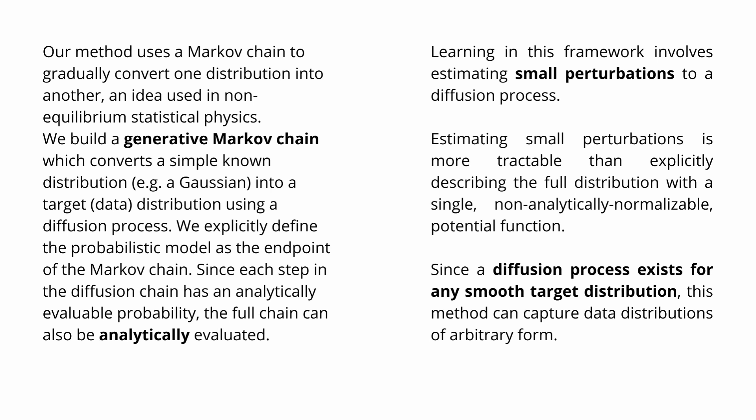The essential point, visible on the right-hand side, is that learning involves estimating small perturbations to the diffusion process. This is the trick from physics: if you cannot solve it completely, you start with small perturbations and let the dynamical system evolve. If you are familiar with Monte Carlo simulation, this was one of the main processes for approaching nature. Estimating small perturbations is more tractable than explicitly describing the full distribution with a single non-analytically normalizable potential function. Since the diffusion process exists for any smooth target distribution, this method can capture data distributions of any arbitrary form — making it a general generative model.